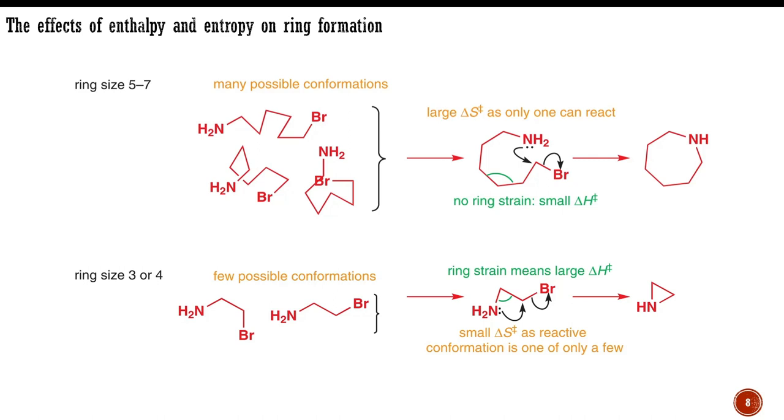For 3-membered rings, on the other hand, the reacting atoms are already very close together and almost no order needs to be imposed on the molecule to get it to cyclize. Rotation about just one bond is all that is needed to ensure that the amine group is in the perfect position to attack the antibonding orbital of the carbon-bromide bond. The entropy of activation, ΔS‡, is very small for 3-membered rings.